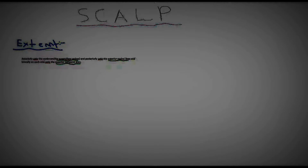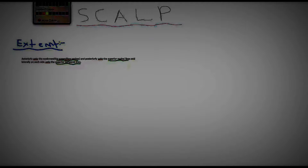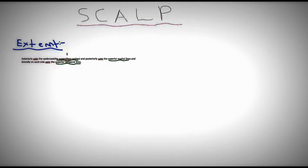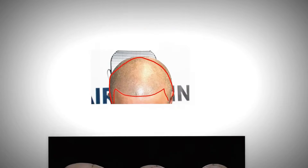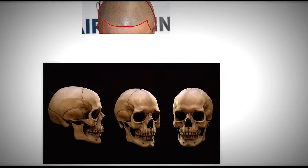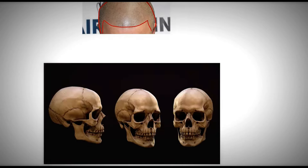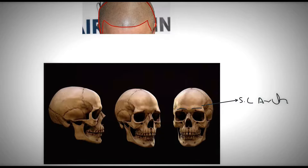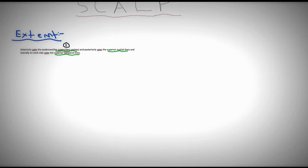I have a picture here where we can understand the extent. At number one we have the superciliary arches. This is a picture of the human skull — you can see the orbit, the supraorbital margin, and the supraorbital notch. Right in this area on both sides we have the superciliary arches.